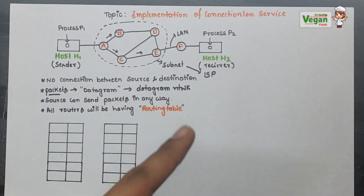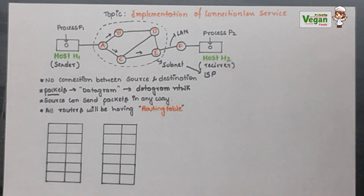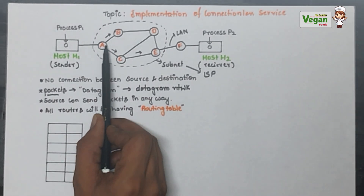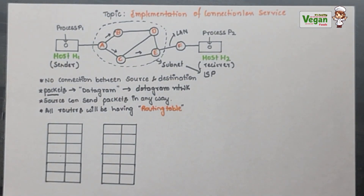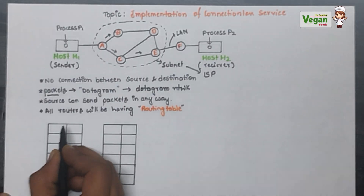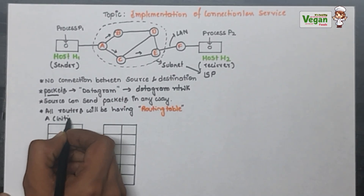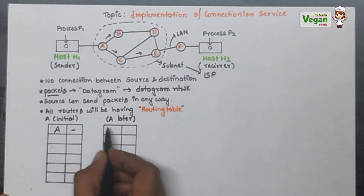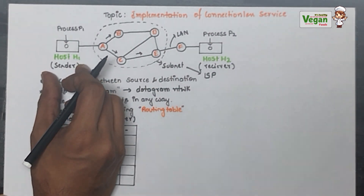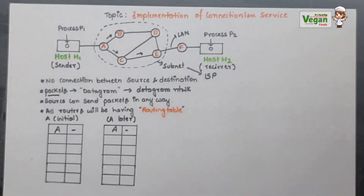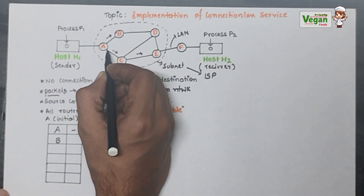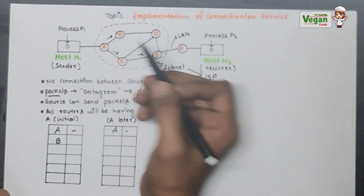Let's consider only one routing table for router A — you can draw similar ones for C, D, and others. For A we have two conditions: it can transfer information through C or through B, choosing the shortest path. The routing table for A has an initial state and a later state. For A to A there is no change, since the sender's packets go to the nearest router A. For B, the information goes directly to B.